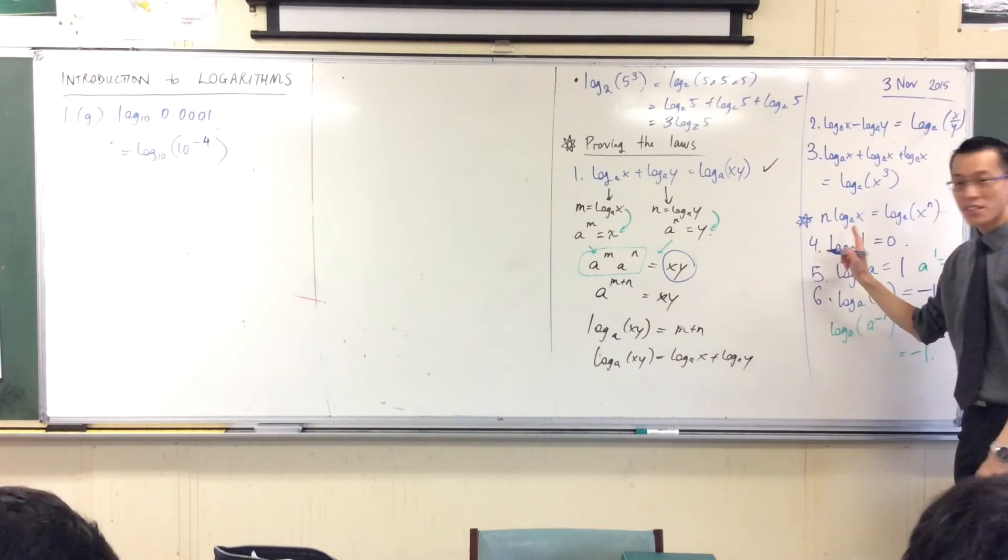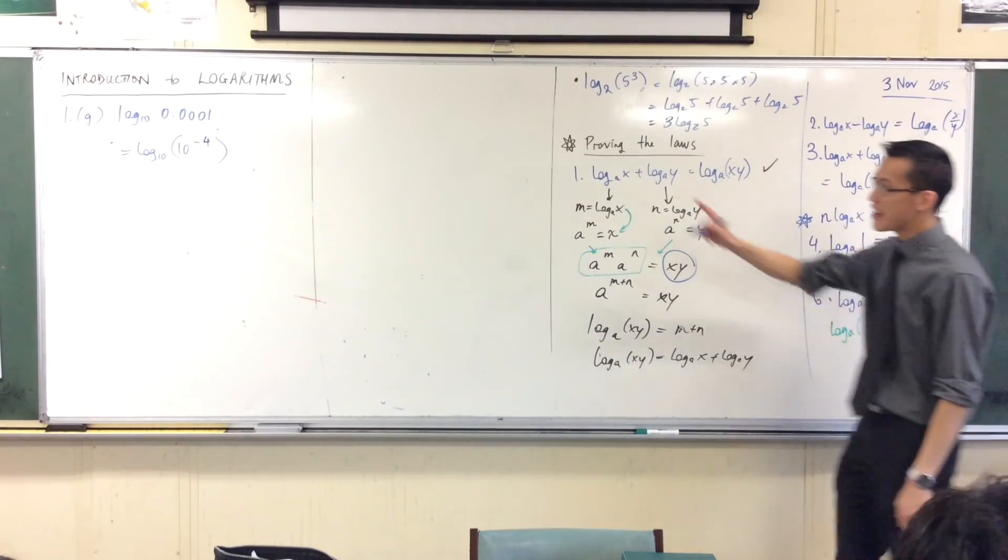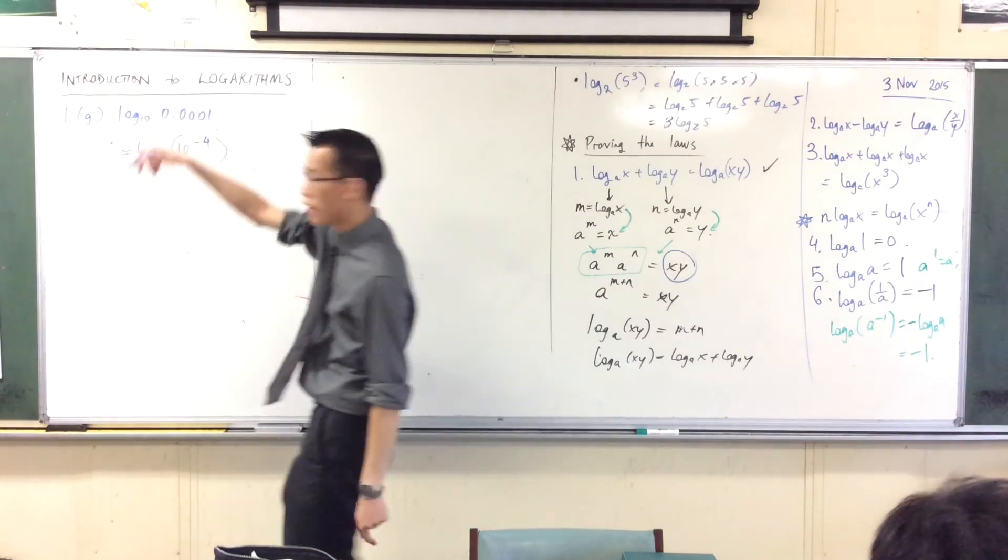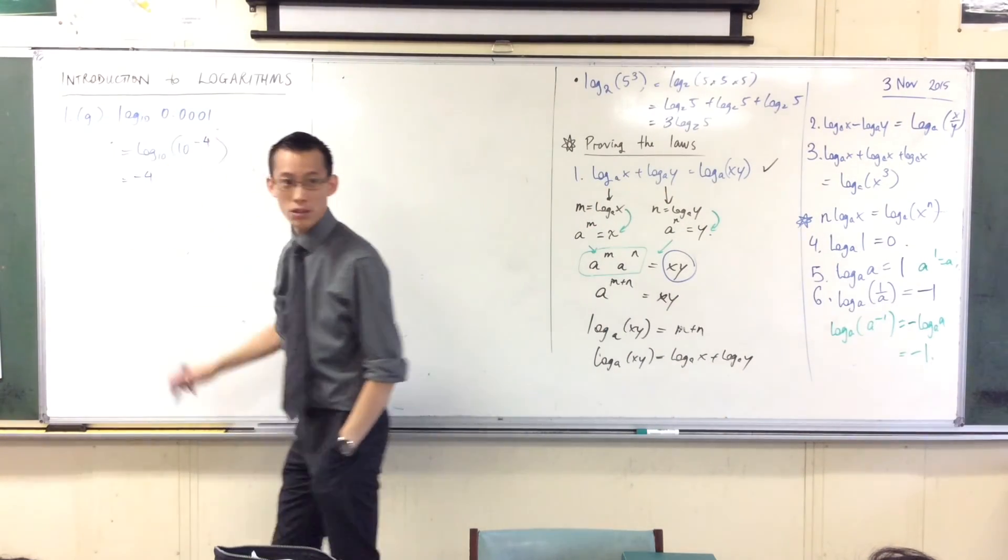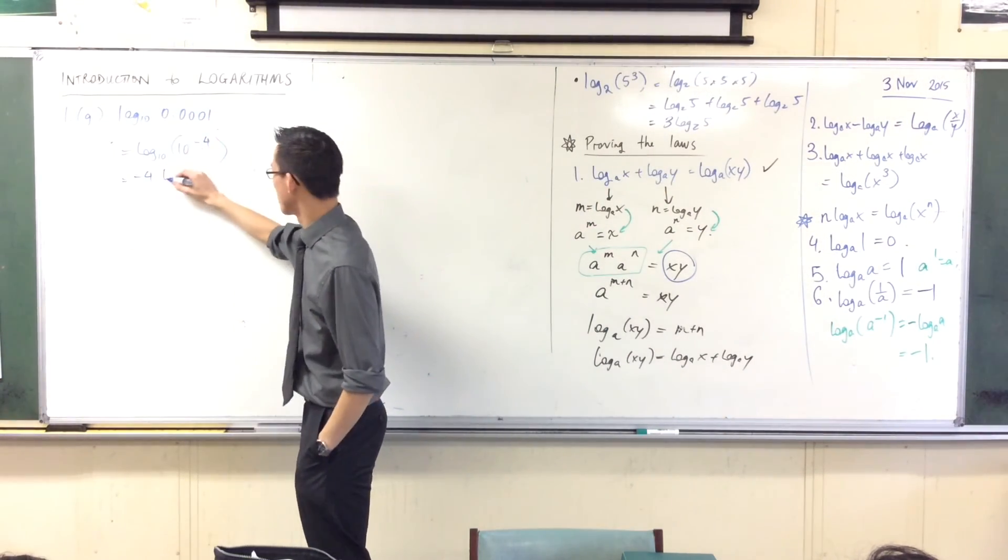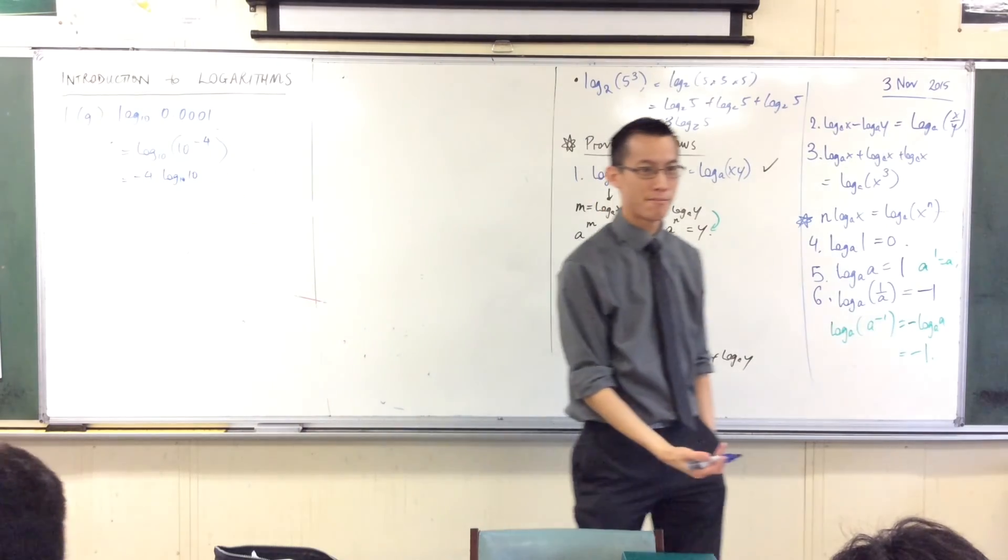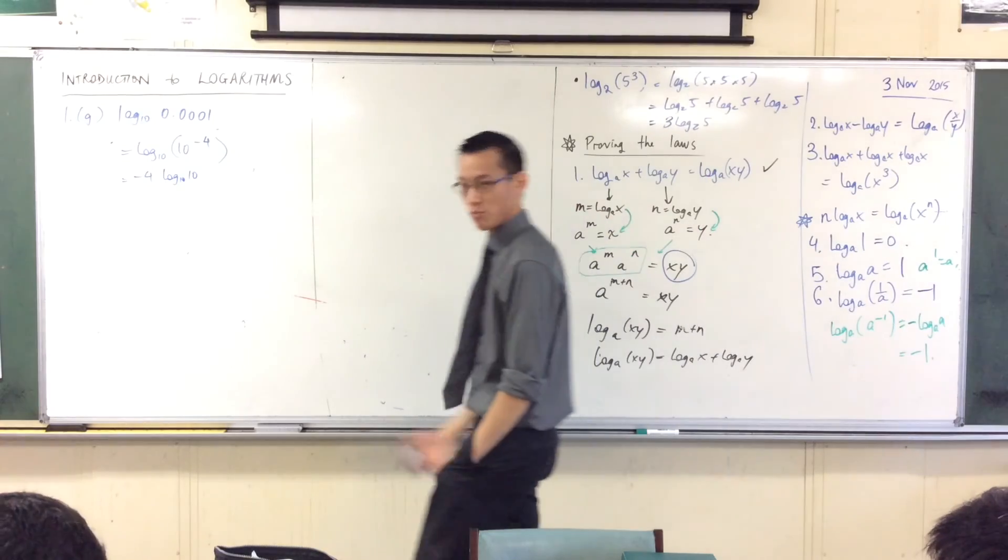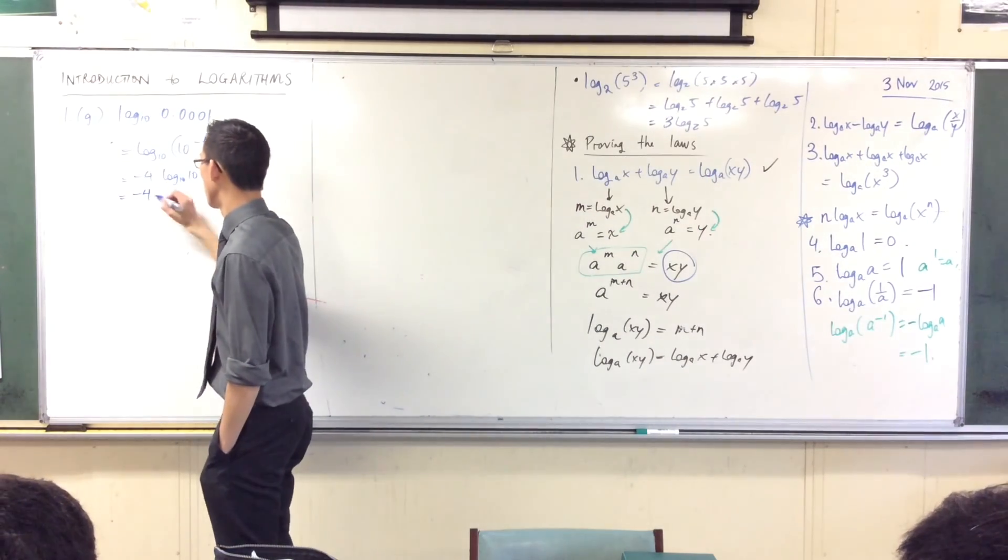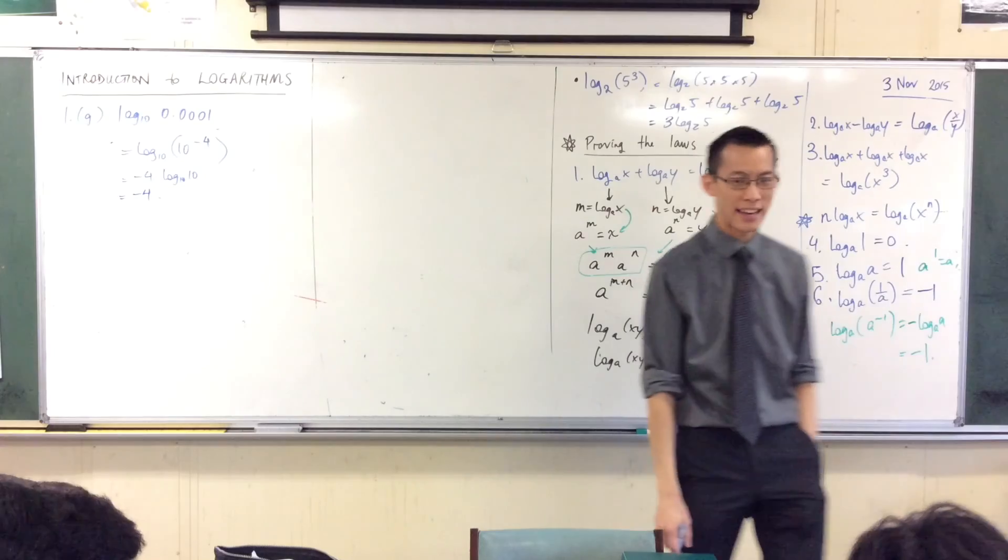Now, based on the power law here, that negative 4, the power, is just going to hop out the front. It's just going to be negative 4 times whatever's left over, which is log base 10 of 10. How long does it take me to grow to 10? One minute. Just one. So this is negative 4 times 1, which is negative 4.